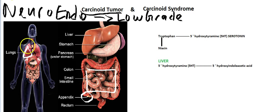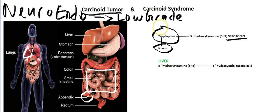So what happens usually is that carcinoid tumor produces serotonin. Serotonin, also known as 5-HT or 5-hydroxytryptamine, is produced from tryptophan. Now tryptophan also produces niacin. So this tumor is producing a lot of serotonin, which is using up all the tryptophan and you are not able to make niacin. So what deficiency is this going to cause? Well, if you said pellagra, you are right.